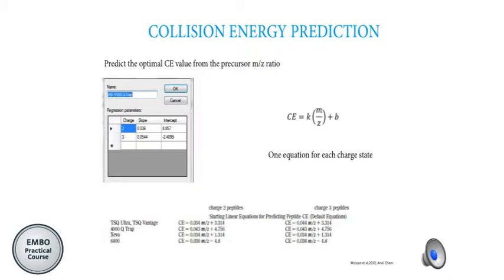We saw yesterday during the tutorial this formula that is in Skyline — this is for the 5500 QTRAP — in which we have a slope and intercept that goes into this formula to calculate the collision energy. We have one equation for charge 2 and one equation for charge 3. This is similar in other instruments and they are usually divided by the charge of the peptide.